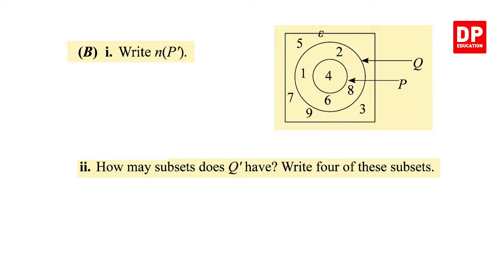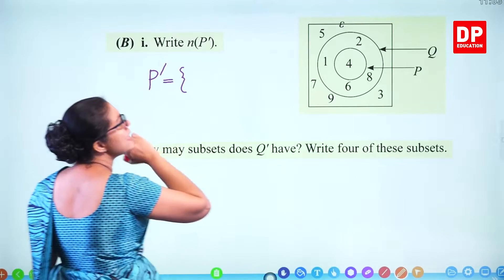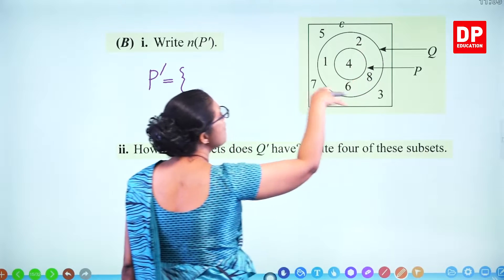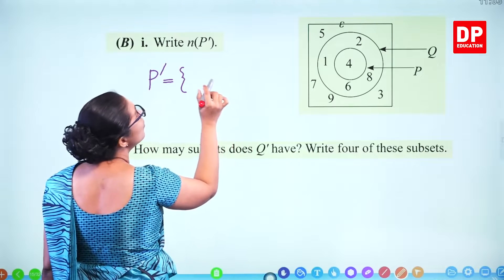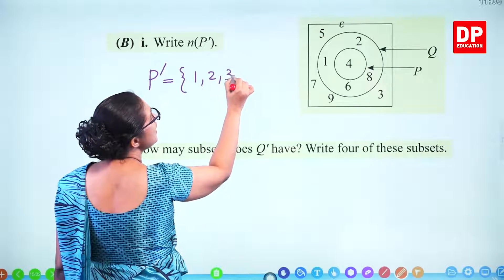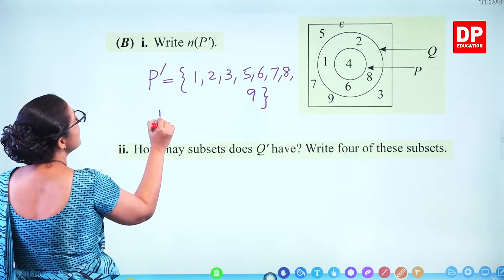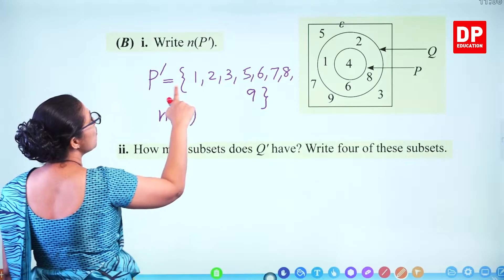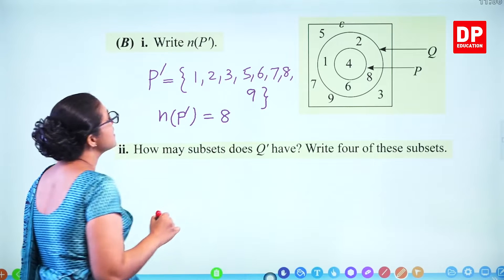Write N(P dash). First we need to find out what P dash is — everything outside P. So you can't write 4 — all numbers except 4: 1, 2, 3, 5, 6, 7, 8, 9. How many elements are there? 1, 2, 3, 4, 5, 6, 7, 8 — that's 8 elements.